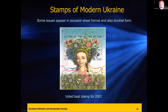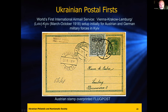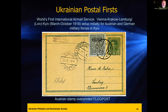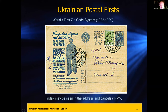Some Ukrainian firsts: the first international airmail service ran Vienna to Kraków to Lemberg (Lviv today) and Kyiv — here's the airmail post stamp. There are lots of these available and very collectible — I've seen exhibits for the first international airmail covering different rates in different cities. The world's first zip code was invented in Ukraine — here's a postcard promoting the use of the zip code, showing 'INDEX' and a postal code.